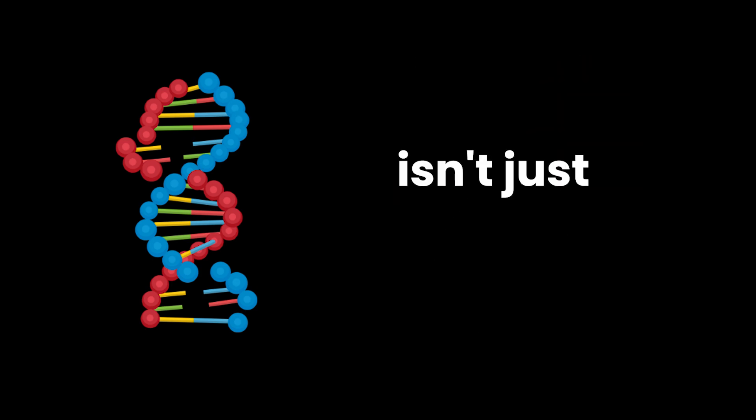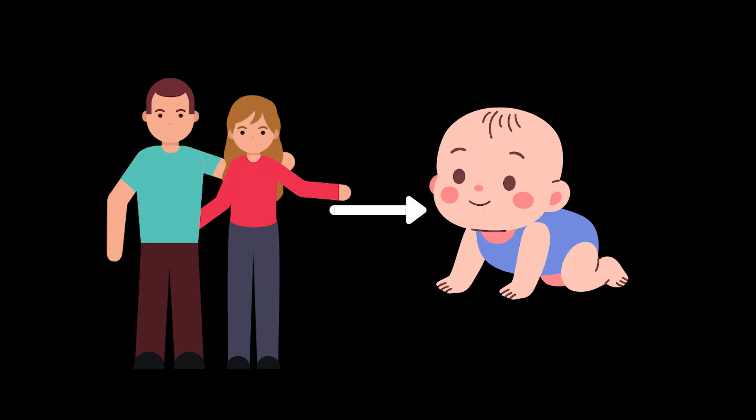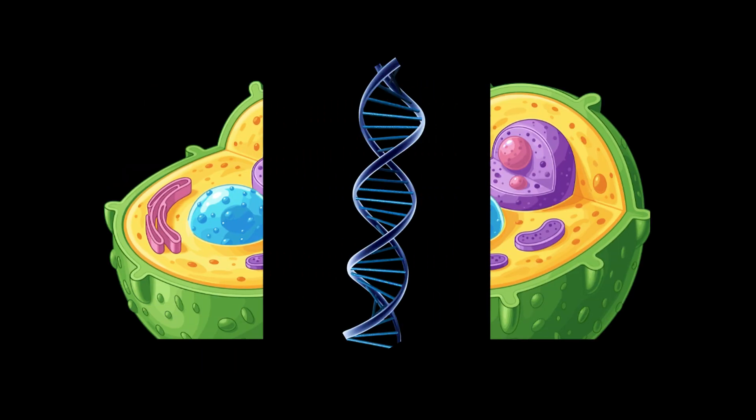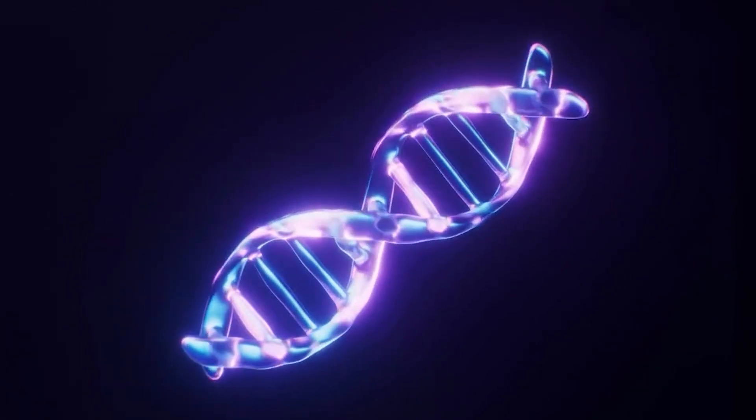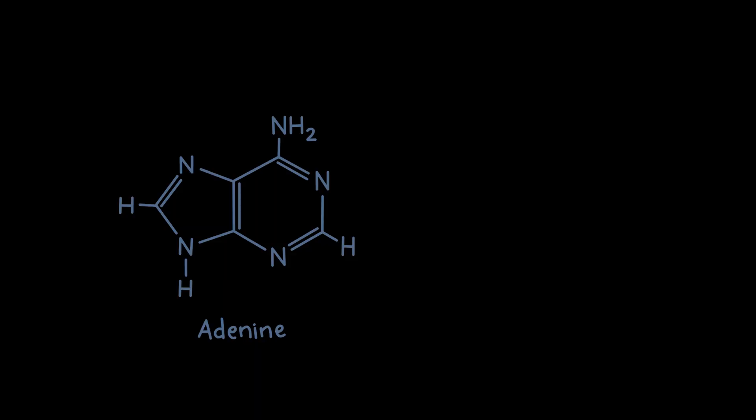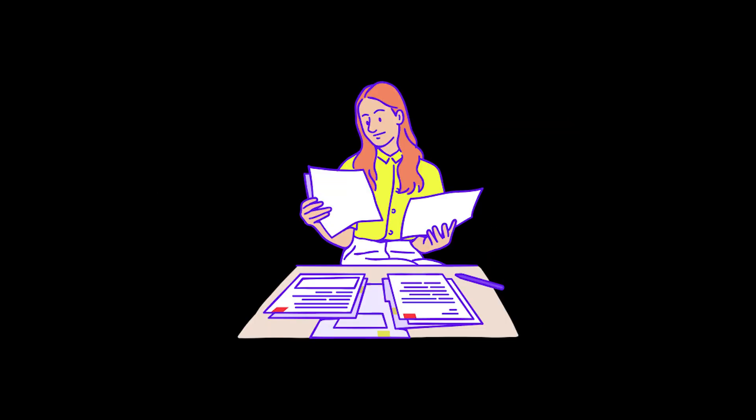But genetics isn't just about making proteins. It's also about inheritance. Passing traits to the next generation. When cells divide, DNA has to copy itself. This happens during DNA replication. The two strands separate and new complementary strands form. Because A pairs with T and C pairs with G, each new DNA molecule is an almost perfect copy. Almost is important.